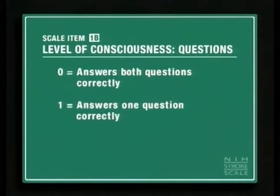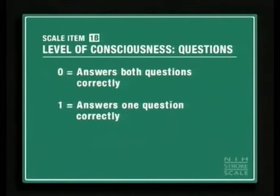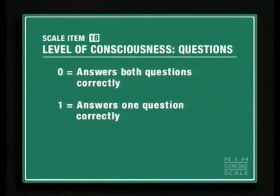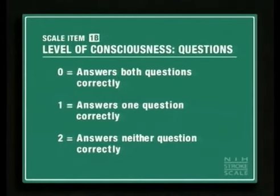By definition, patients unable to communicate because of endotracheal intubation, orotracheal trauma, severe dysarthria from any cause, a language barrier, or any other problem not secondary to aphasia are scored a one. Score a two if neither question is answered correctly. A patient who scores a three on Level of Consciousness 1A must be scored a two on this scale item. Aphasic and stuporous patients who do not comprehend the questions will also score a two.